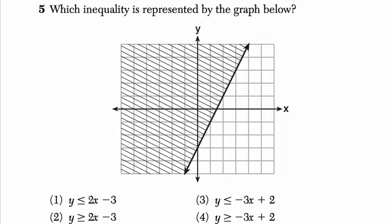So we have this graph, and what we're looking at is a line right here. So it's a graph of the line, and then the reason there's all these lines above it is because we're shading above the line. We're saying that this is a graph of this line and everything above it.